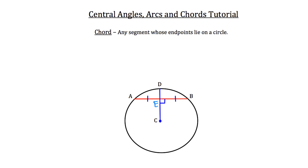Now another important piece of information is that congruent chords have congruent arcs and congruent central angles. So if I were to draw two congruent chords — as indicated here — chord WX, which is written in red here, is going to be congruent, as indicated by that red congruency tick mark, to chord YZ.